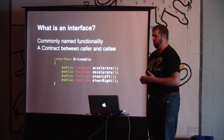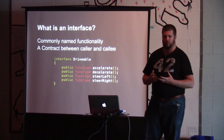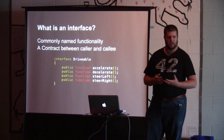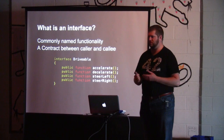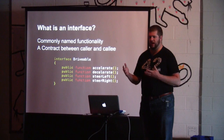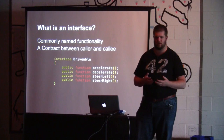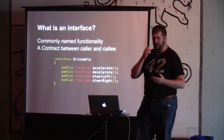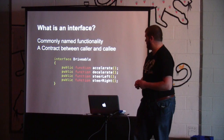The next concept is an interface. An interface is a way that we can ensure that certain objects have particular functionality. By telling an object it's implementing a particular interface, we're guaranteeing that everything that's going to use that object is going to be able to have that functionality — we can rely on it. So if we say we've got this interface called drivable, we know we're going to be able to accelerate and decelerate and steer left and steer right. How you're able to do that may differ from class to class, but we know that those methods are going to be on that object.